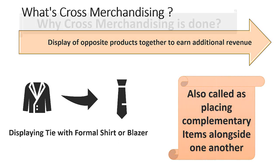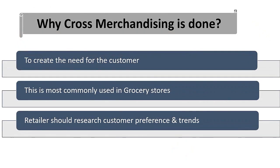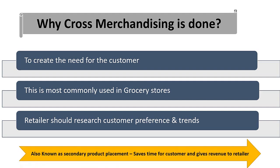Why is cross merchandising done? The idea is simple — if the customer is looking for one item, they might also need another. This type of merchandising is incredibly common in grocery stores. It is important to research customer preferences, take seasonal trends into account, and most importantly, pair items that are often used together.